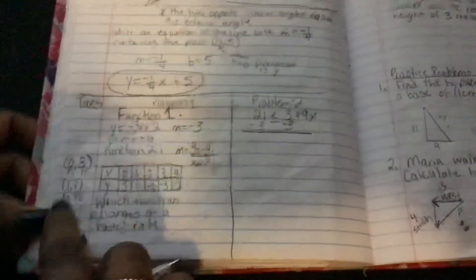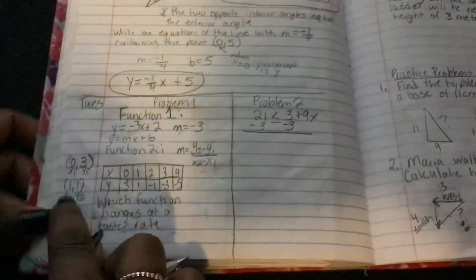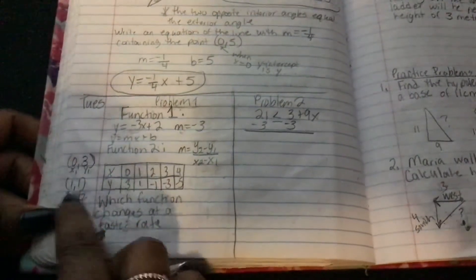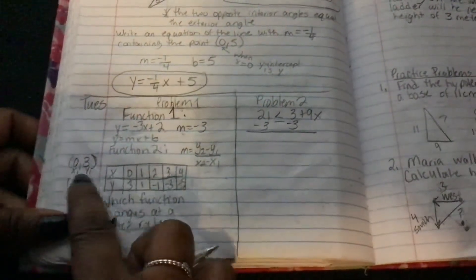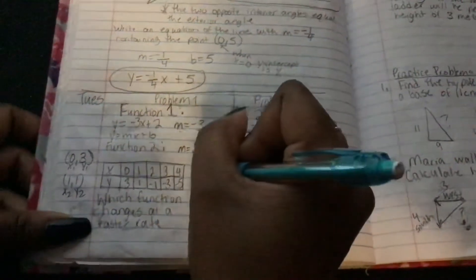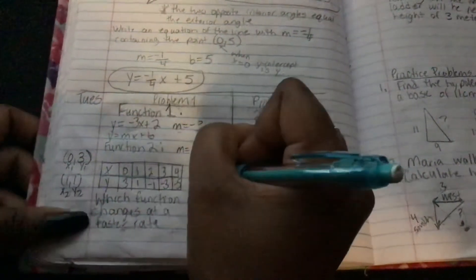These subscripts or numbers only tell us it's more than 1x and more than 1y. This is our first point, this is our second point. We could have used any point from the table.